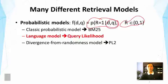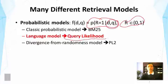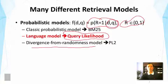In this category of models, there are different variants. The classical probabilistic model has led to the BM25 retrieval function, which we discussed earlier because its form is similar to a vector space model. In this lecture, we're going to discuss another subclass called language modeling approaches to retrieval. There is also another line called divergence from randomness, which has led to the PL2 function.